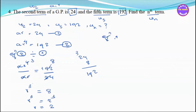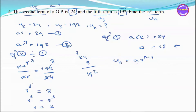So the equation gives r equal to 24, and a is equal to 4. So Un equals the formula: a times r to the power n minus 1.